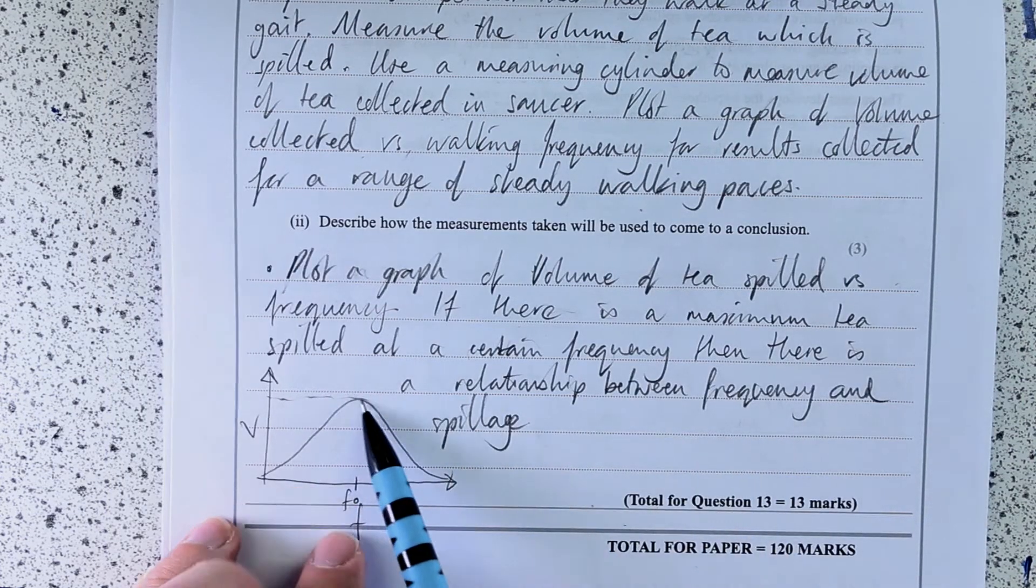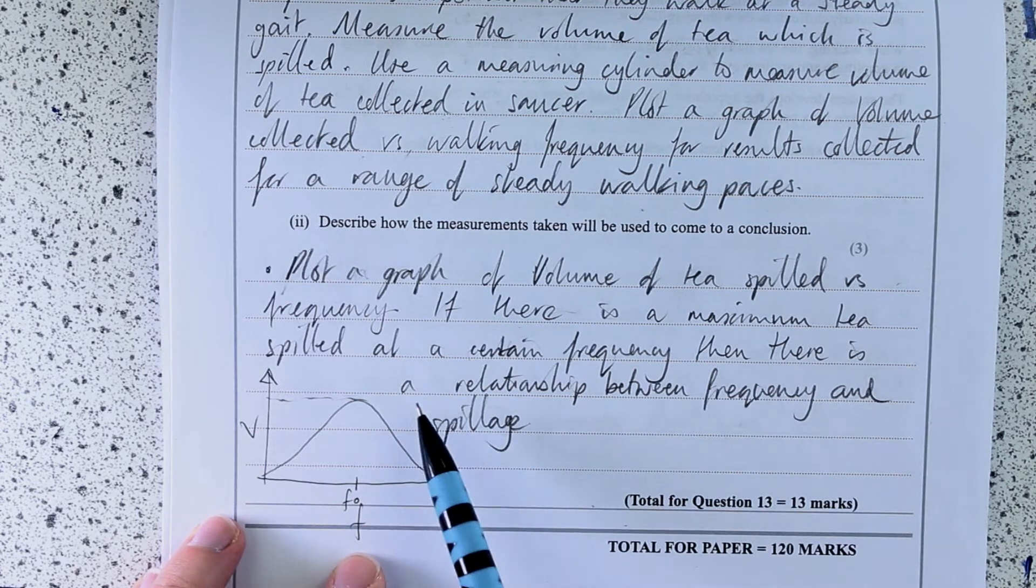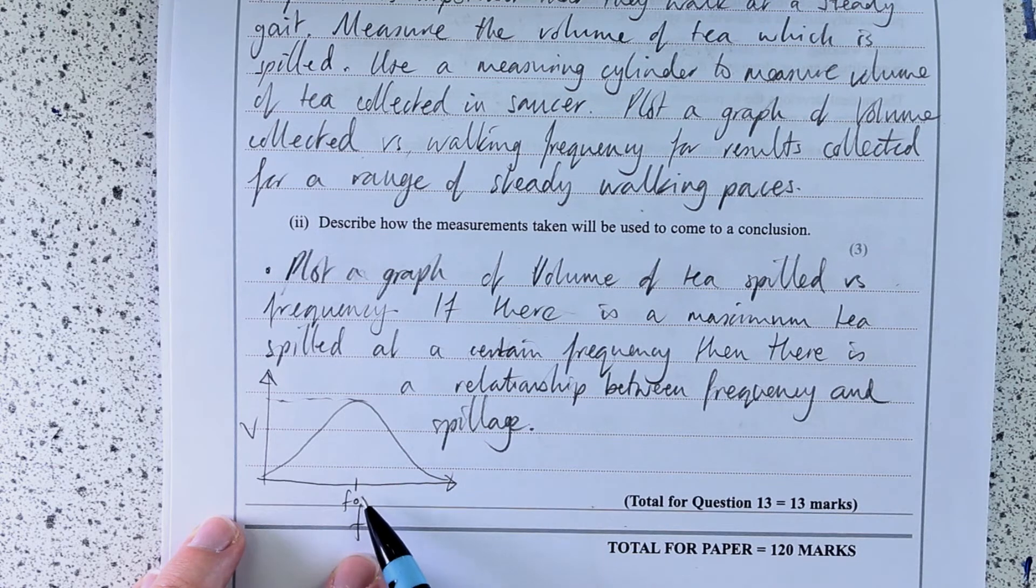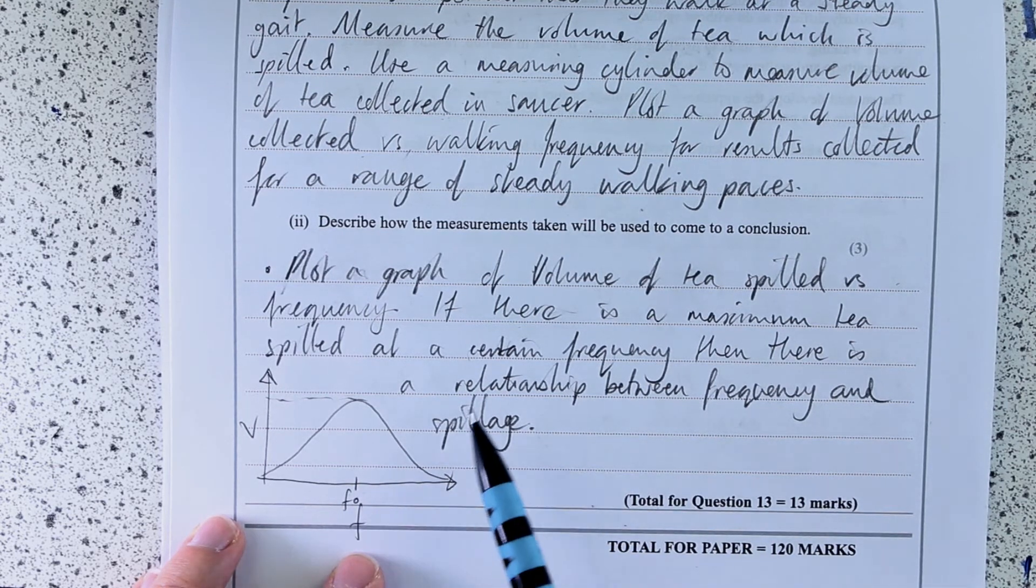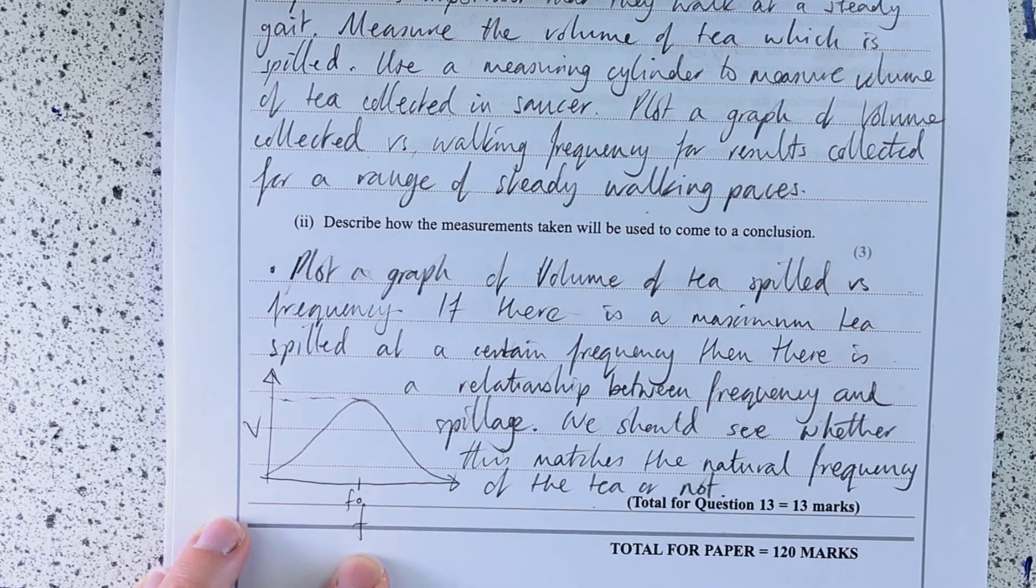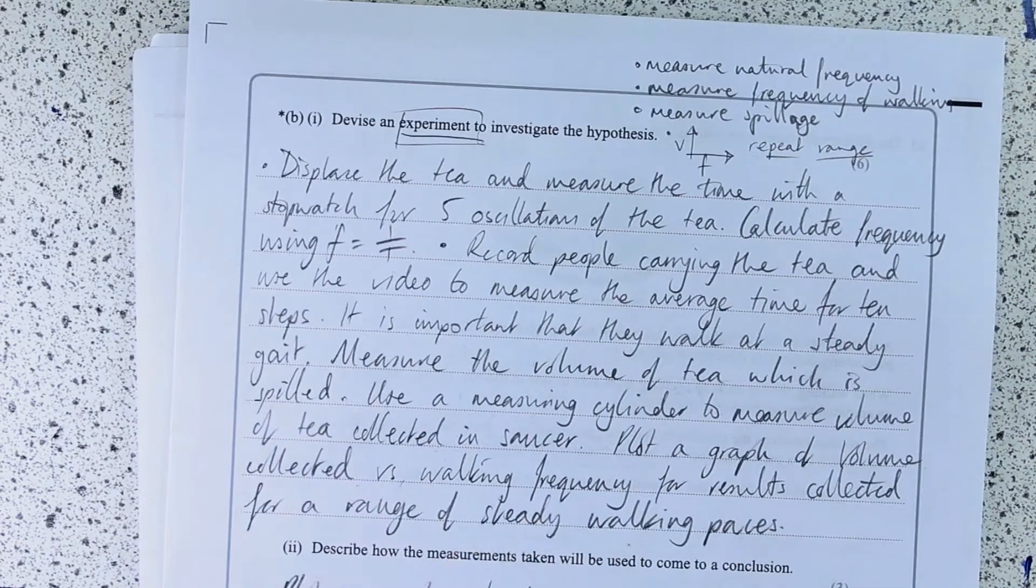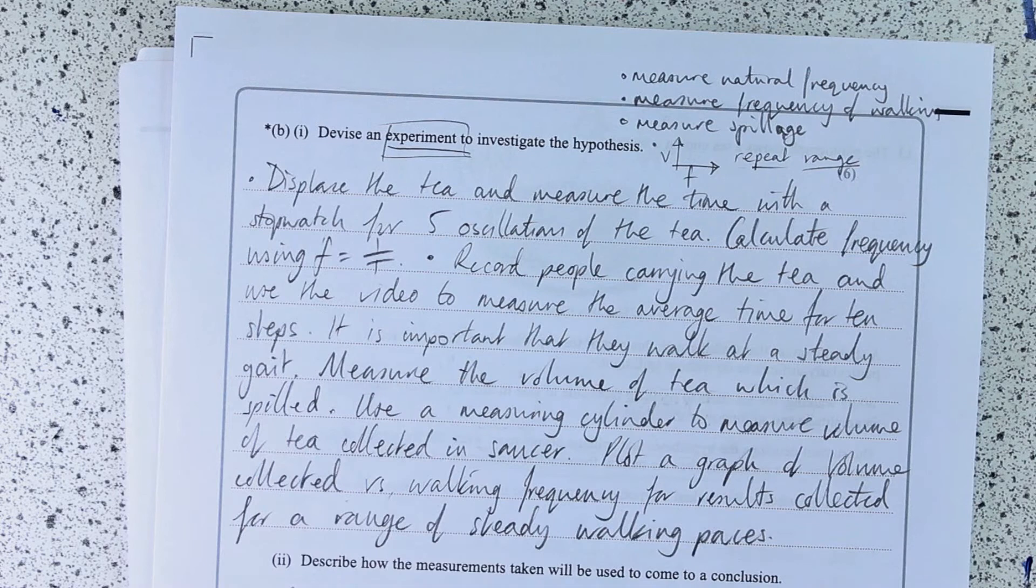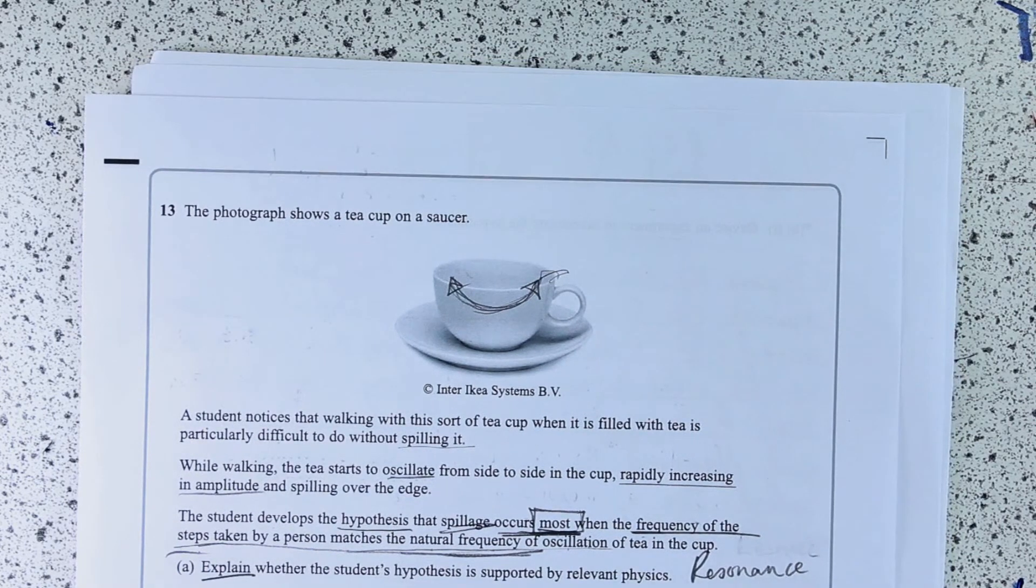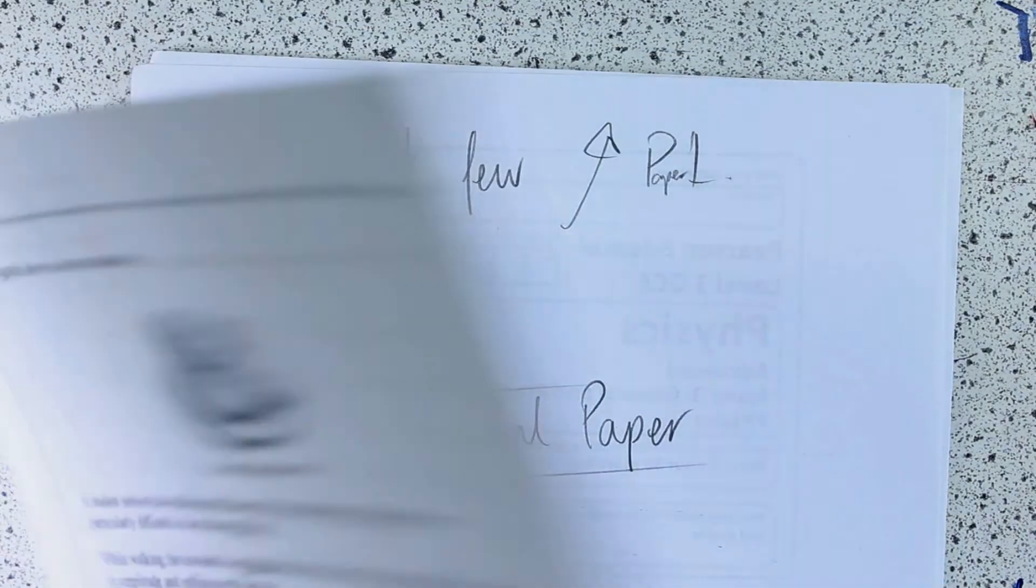So that's what I'm going to try and say in words now. If there's a maximum tea spilled at a certain frequency, then there's a relationship between frequency and spillage. We should see whether this matches the natural frequency of the tea or not. So that's that one there. Really, again, it's not so much about tea.